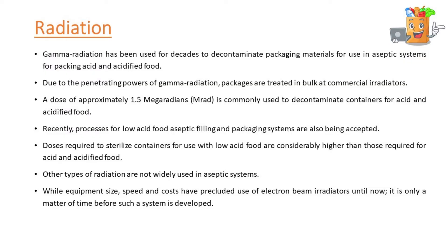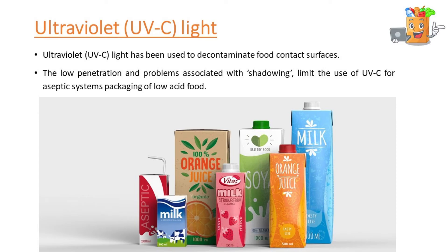The next one is radiation. Gamma radiation has been used for decades to decontaminate packaging materials for use in aseptic systems for packing acid and acidified food. Due to the penetrating powers of gamma radiation, packages are treated in bulk at commercial irradiators. A dose of approximately 1.5 mega radians is commonly used to decontaminate containers for acid and acidified food. Recently, processes for low acid food aseptic filling and packaging systems are also being accepted. Doses required to sterilize containers for use with low acid food are considerably higher. While equipment size, speed and costs have precluded use of electron beam irradiators until now, it is only a matter of time before such a system is developed. Ultraviolet light has been used to decontaminate food contact surfaces, but the low penetration and problems associated with shadowing limit the use of UVC for aseptic systems packaging of low acid food.